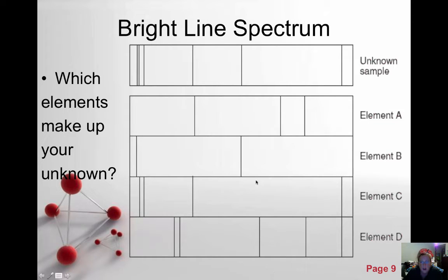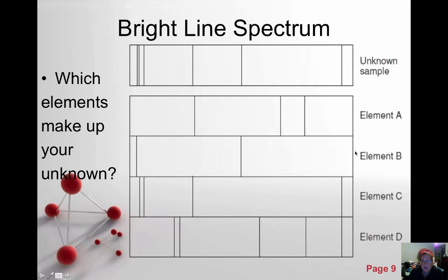So which elements would make up the unknown? If you're looking at elements A, B, C, and D — these are the known spectra for those elements, and this is your unknown sample — you can take a look at the different barcodes. Element A doesn't quite line up; those two lines do not exist in the unknown sample, so we do not have element A. Element B has matching lines, so element B is in the sample. Element C has its lines present as well, so element C is in our sample. Element D's bright line spectrum is not contained in our unknown. So this unknown consists of elements B and C, identified by the particular code given off by the bright line spectrum.